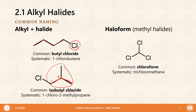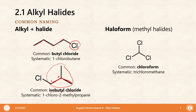If we have three of the same halide connected to a methyl group, we call it a haloform. We have chloroform — that's the structure of chloroform, the popular solvent. Likewise, there exist other haloforms: fluoroform, bromoform, and iodoform. This is the general structure of the haloform name.